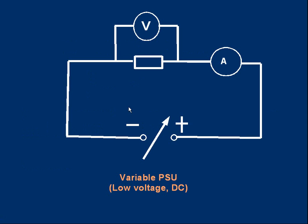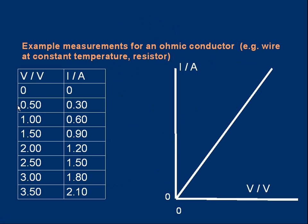Let's start with a simple ohmic conductor — a resistor. If I want to measure the characteristic IV curve of the resistor, I could use a circuit like this. I would measure the current passing through the resistor and the voltage across it, and I can change the applied voltage using a variable power supply and build up a table showing what currents pass through the resistor for different applied voltages. The table might look something like this.